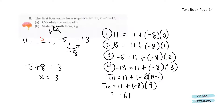State the 10th term. So the formula is Tn equals to the first term plus the difference times n minus 1. We know the pattern is Tn equals to 11 plus negative 8 times n minus 1. For the 10th term, n minus 1 will be 9. So we have 11 plus negative 8 times 9, that will give us negative 61.